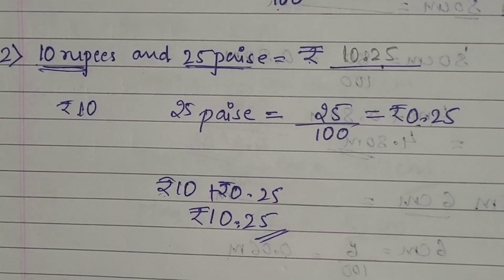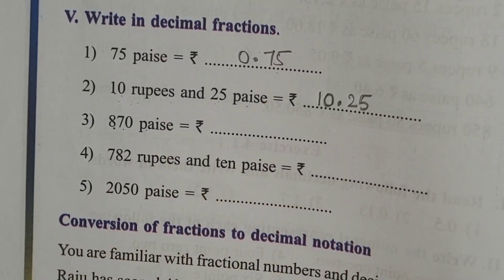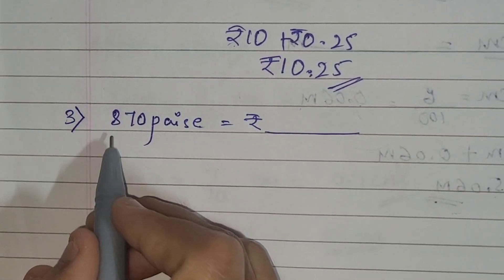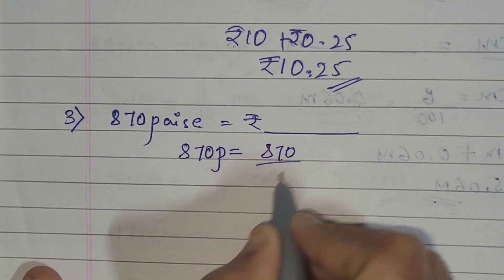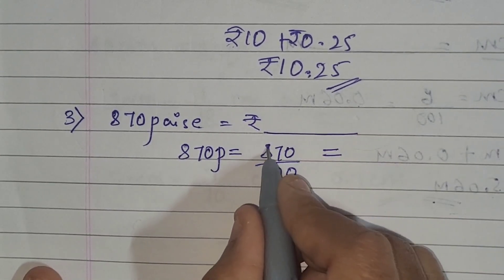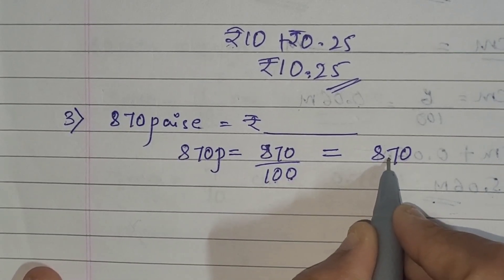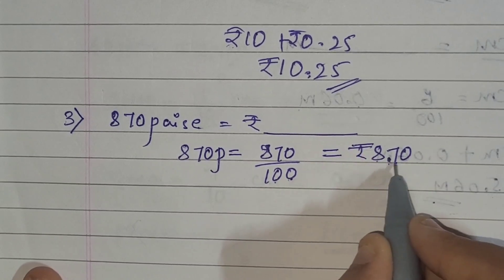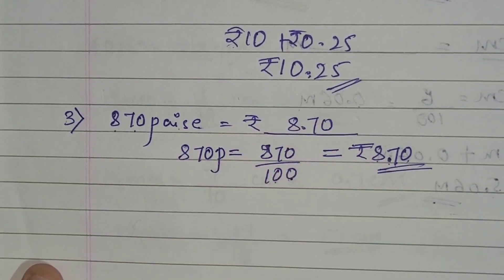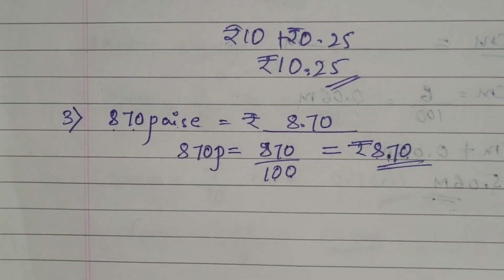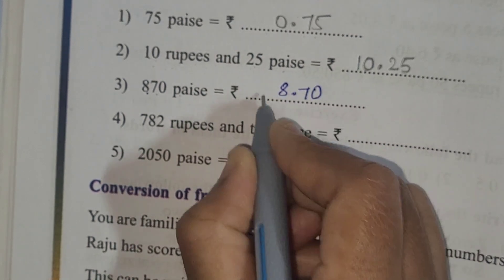Now the third one: 870 paisa is equal to how many rupees? Let's solve it. 870 paisa equals 870 divided by 100. Since there are two zeros in 100, we put the decimal point after two digits from the right, giving us 8.70 rupees. So 870 paisa is equal to rupees 8.70.